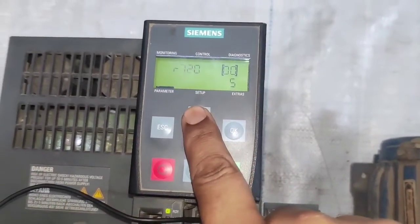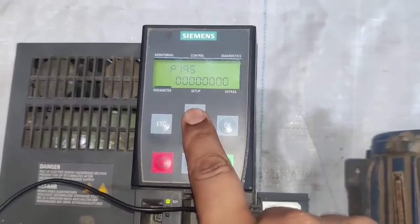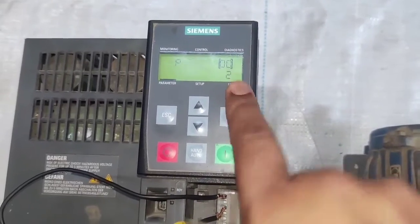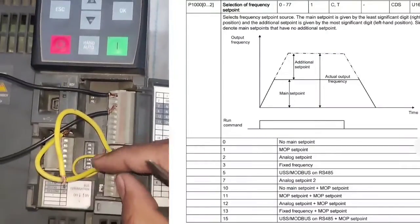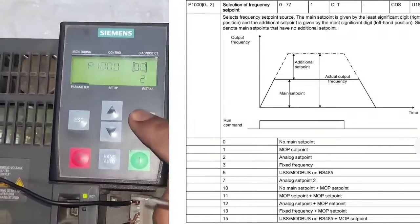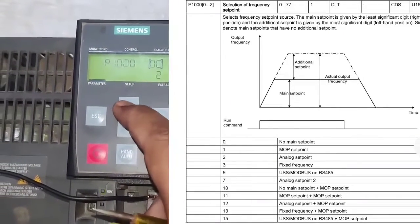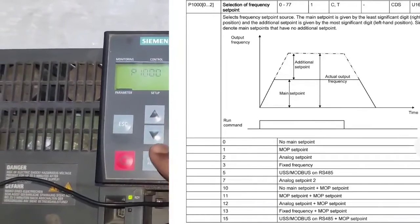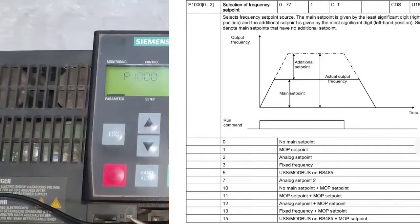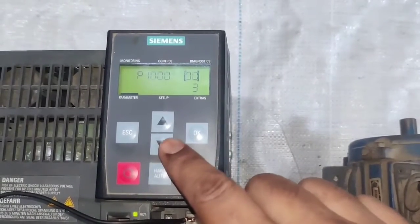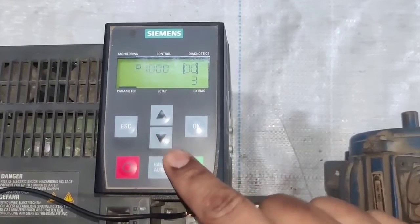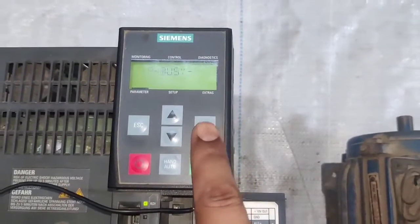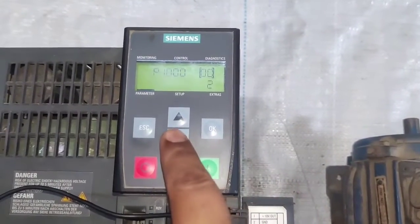Now the digital input terminal setting is done. Next parameter is P1000 for selection of frequency set point — how we increase frequency. Because we want to control frequency with a potentiometer, we set 2 for analog set point. If you want to run at a fixed frequency, set 3 in P1000. We set 2 and press OK.